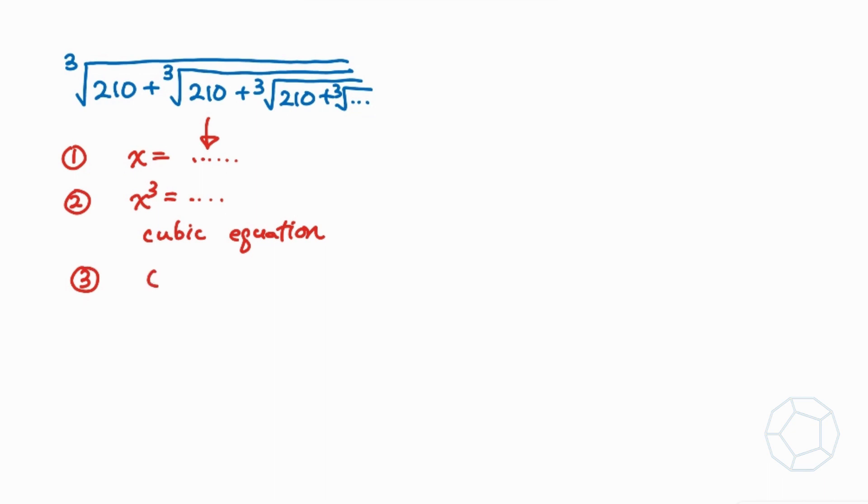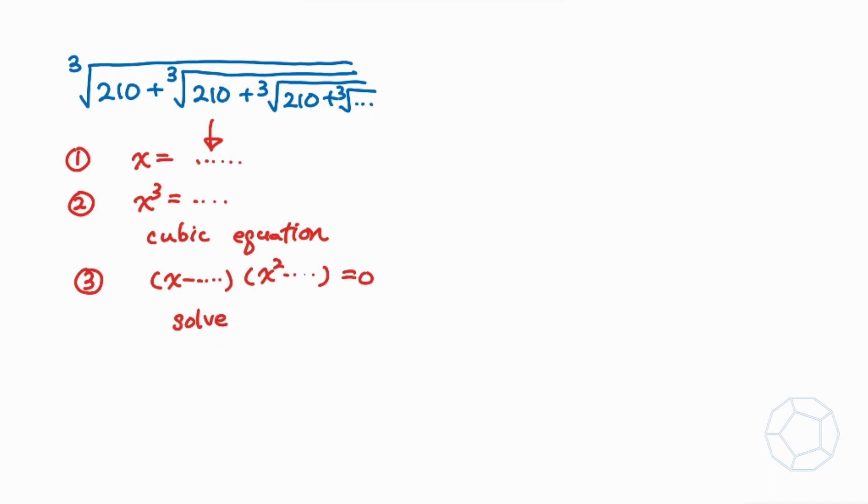Later on, we'll factorize the cubic polynomial into a linear expression x minus a constant and another one which is quadratic in x. Finally, we'll solve for the real roots of the equation to obtain the value of the expression. That's all about the thinking process, let's jump to the detailed solutions.